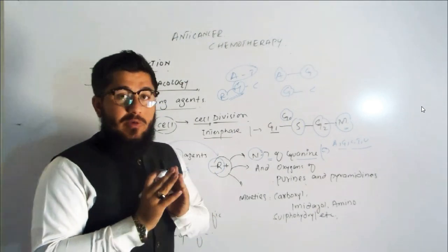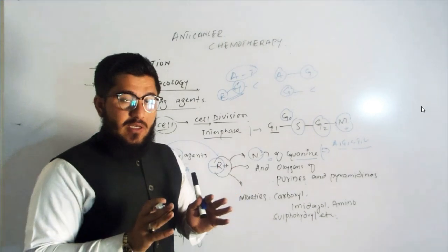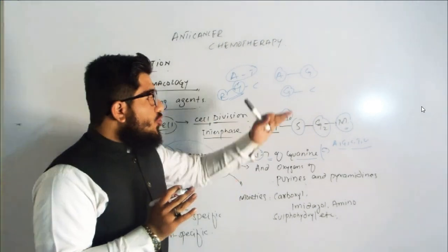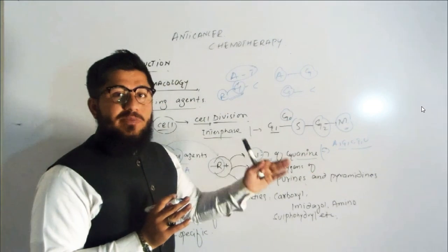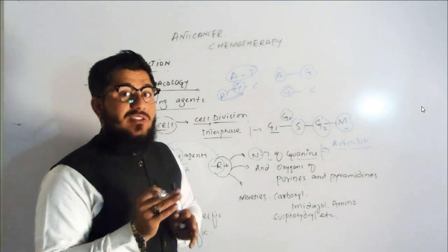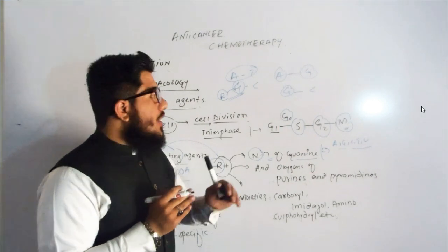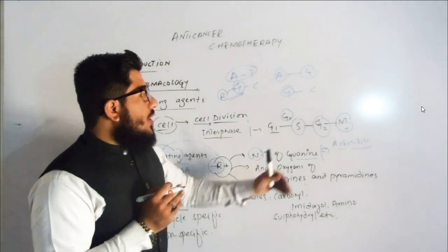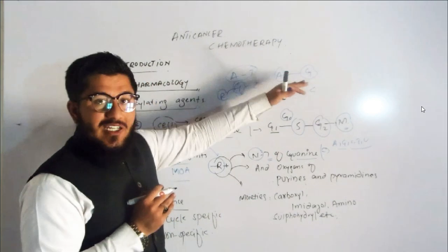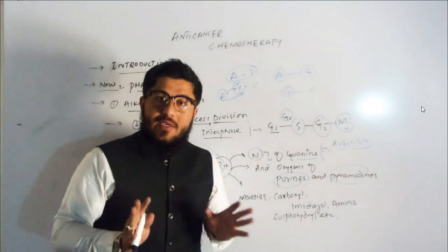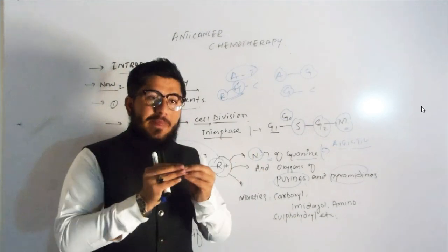If abnormal base pairing takes place, you know that there will be no formation of DNA. So what is our main target regarding anti-cancer? We are supposed to block cell division or stop cell division, because cancer is abnormal or excessive cellular growth. We are going to stop its growth. Now we stopped the cell division.